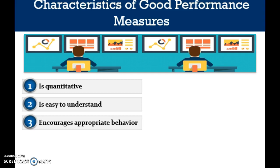While the Wells Fargo issue doesn't address supply chain per se, it provides a pretty startling example of how metrics can drive very bad behavior. So we need to think about these things rather explicitly. The fourth question to be asked is: is the metric visible? Good metrics should be readily available to those who use them.